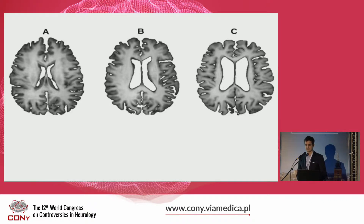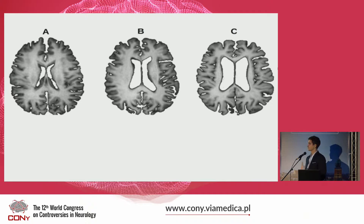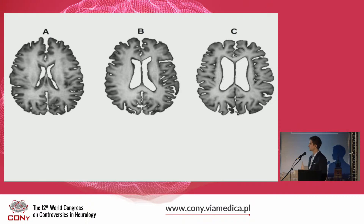For instance, here we can see that patient A has no obvious signs of brain atrophy and brain volume appears normal, whereas patients B and C do have some signs of brain atrophy. Patient C has more severe brain atrophy than patient B. Our question was to find out if these different degrees of brain atrophy would be related to the severity of neurological impairment in Wilson's disease.